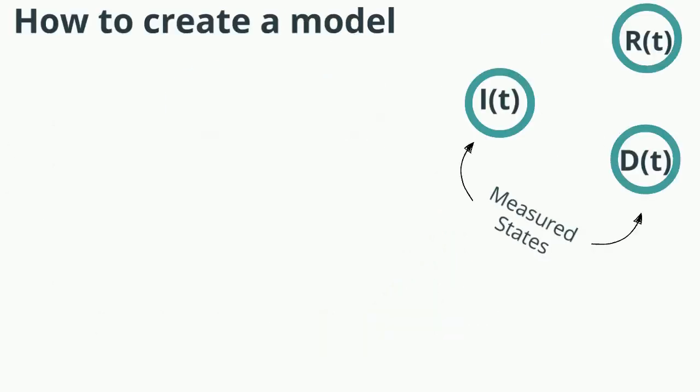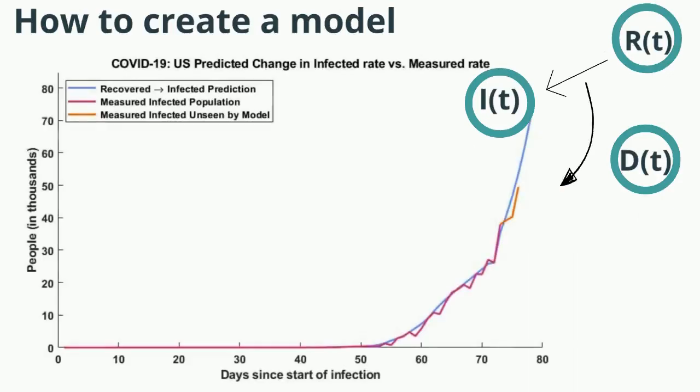Here we can see our infected prediction in blue, and like before, our measured infected state in purple. But this is five days of additional data the model has not seen, here plotted in orange. This is how we further validate our model, and as you can see, the predicted trend matches closely to the measured trend.